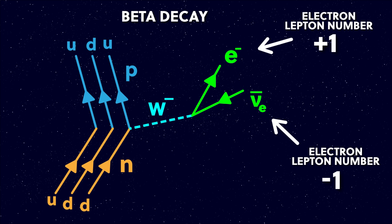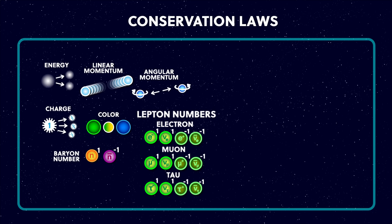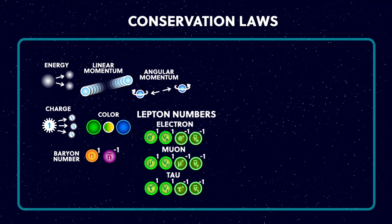It's important to note that the different flavours of lepton are independent, so for example an anti-muon wouldn't cancel out an electron. This means we've got three more conservation rules to add to the conservation laws chart.